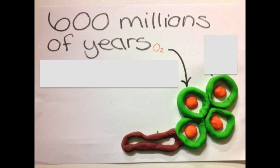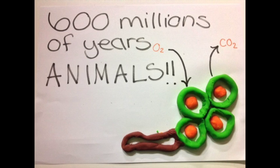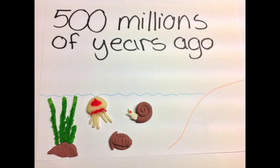Organisms are able to use the oxygen released by the algae to get their energy. Animals appeared on Earth 600 million years ago, and there is an explosion of life in the seas.